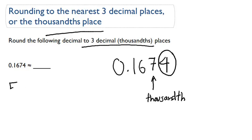Remember the rules. Five or above, round up. Less than five, round down, or stay the same.